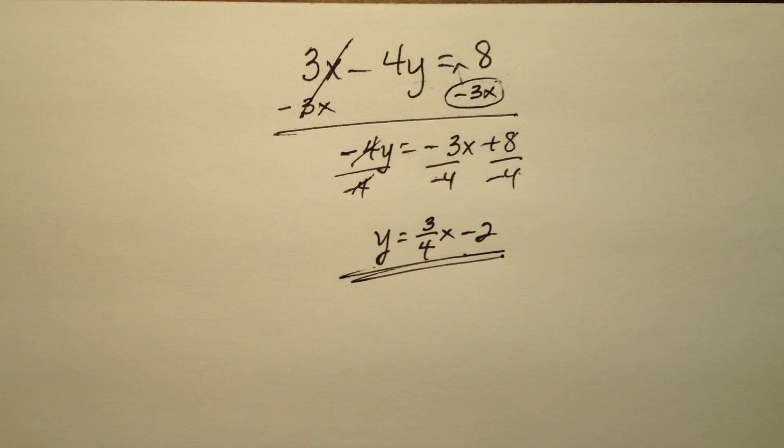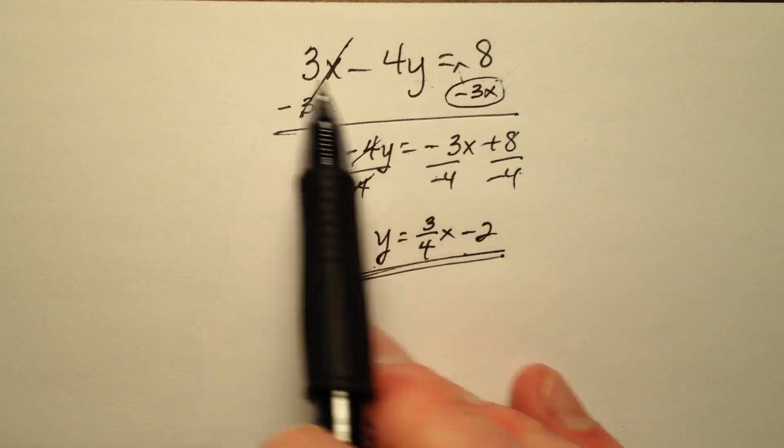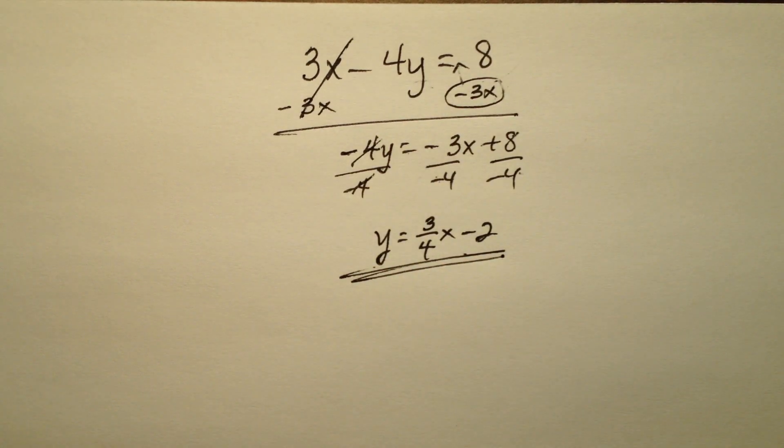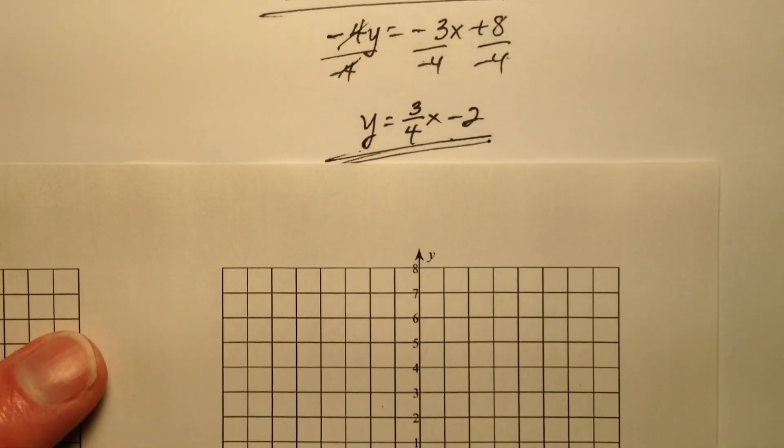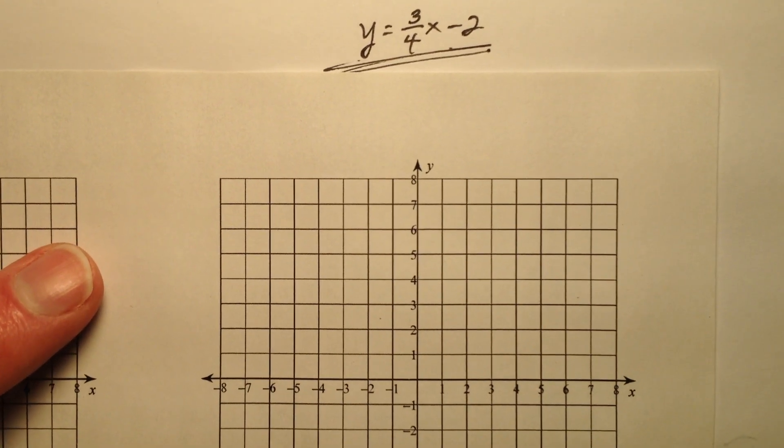So now I have the equation of this line. I've rewritten it from standard form to slope-intercept form. So I'm going to go ahead and grab a graph. I'll move this up a little bit, but we can still see the equation.